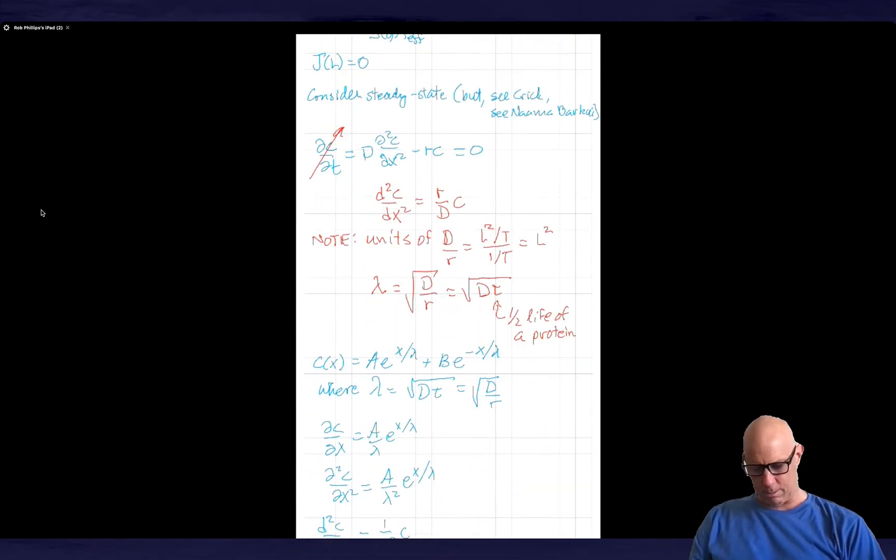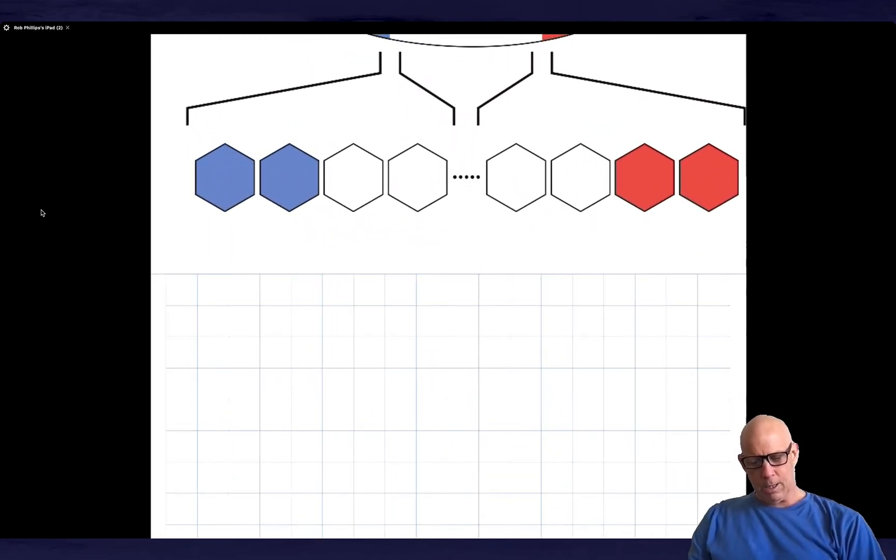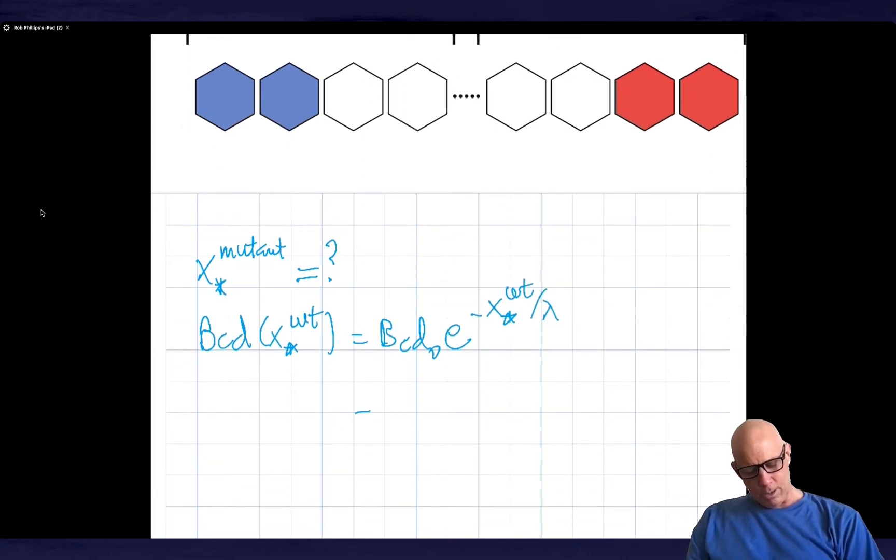So that seems good. So what we want to do is we want to write down a condition for the position of the cephalic furrow or of any of the thresholds. So x star mutant is the goal. That's what we want to find. And what I know is that bicoid at x star wild type is equal to bicoid of 0 e to the minus x star wild type divided by lambda. But I know that this has also got to be equal to f times bicoid of 0 e to the minus x star mutant over lambda.